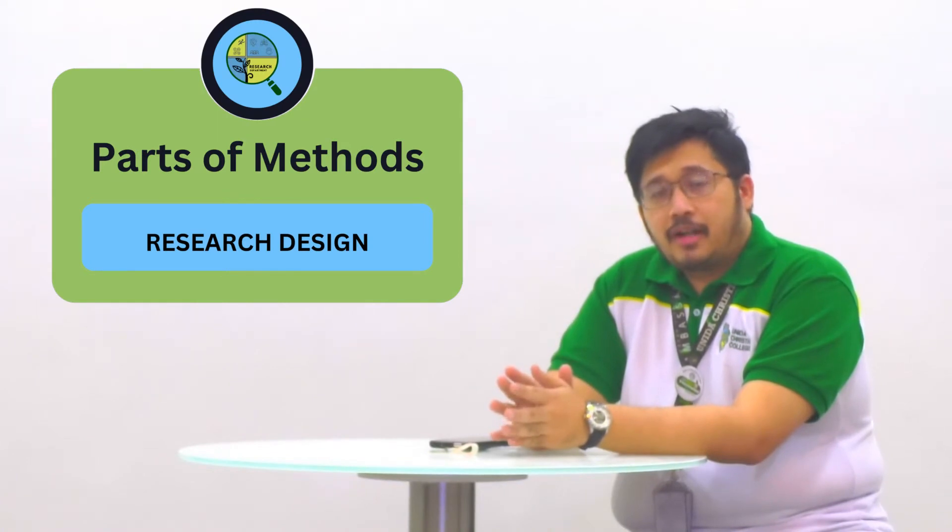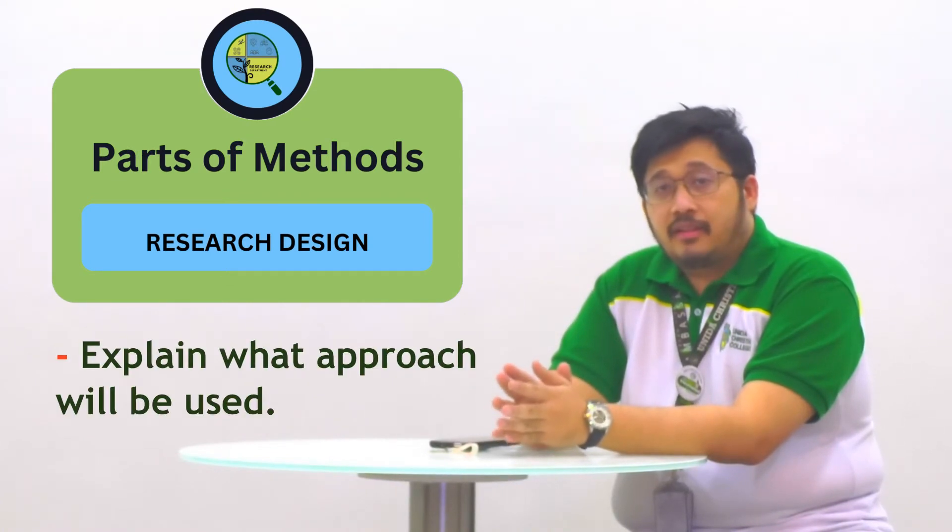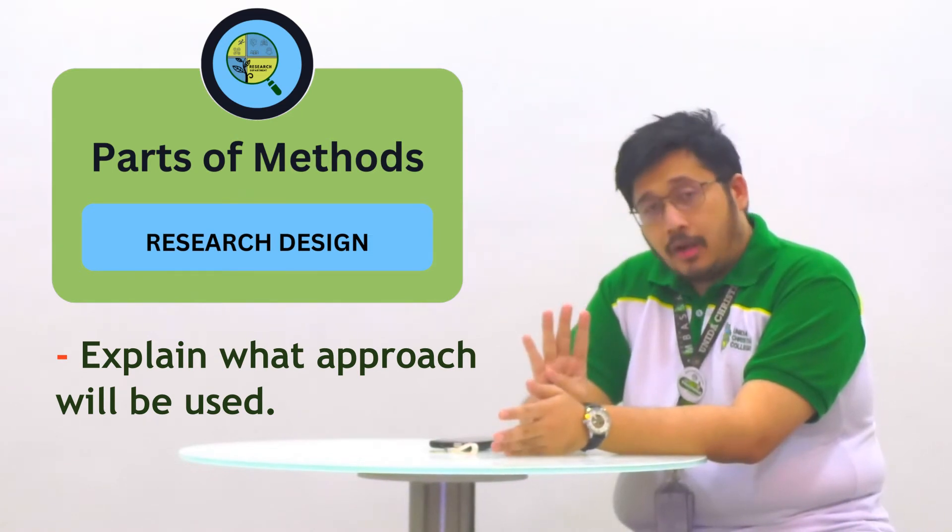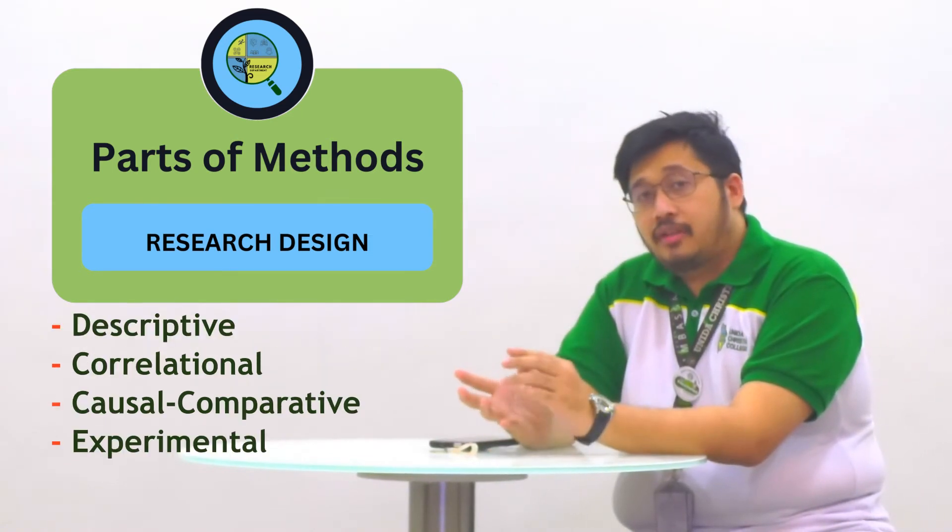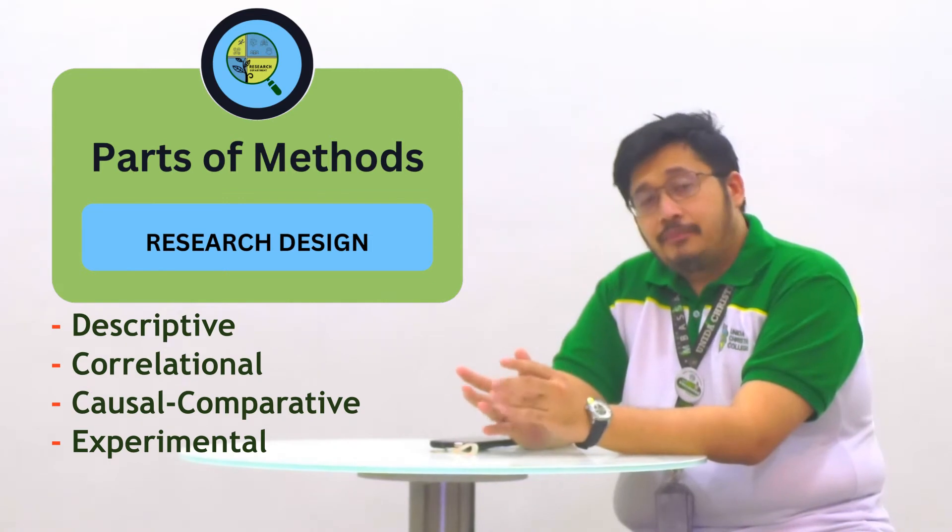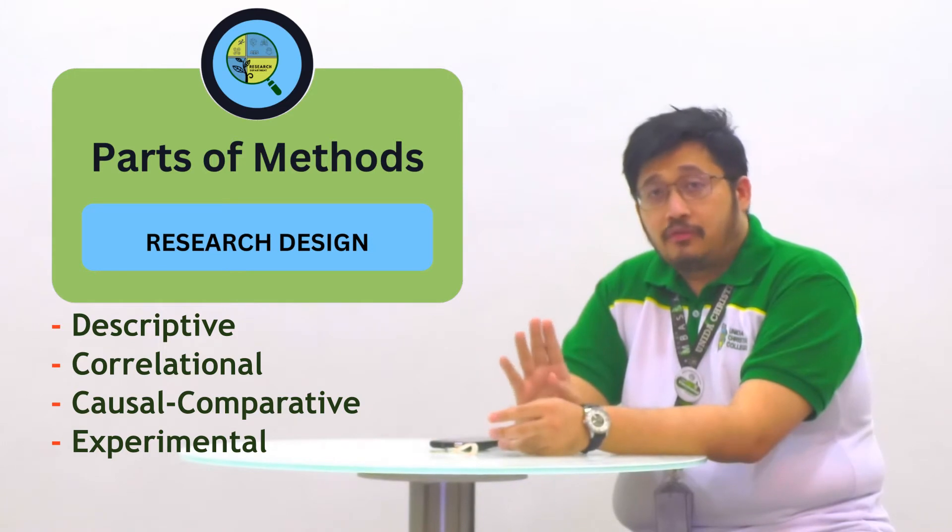Under research design, you have to discuss the specific design or flow that you are going to use in your paper. Since we will be tackling quantitative research, we have four quantitative research designs: descriptive, correlational, causal comparative, and experimental. So you have to choose from those four.